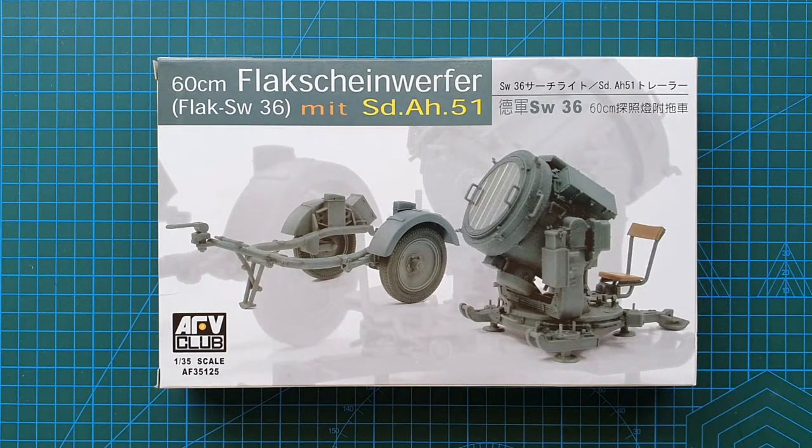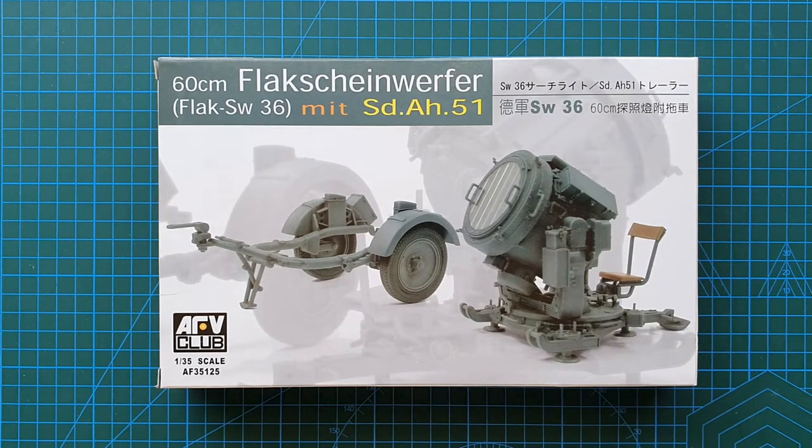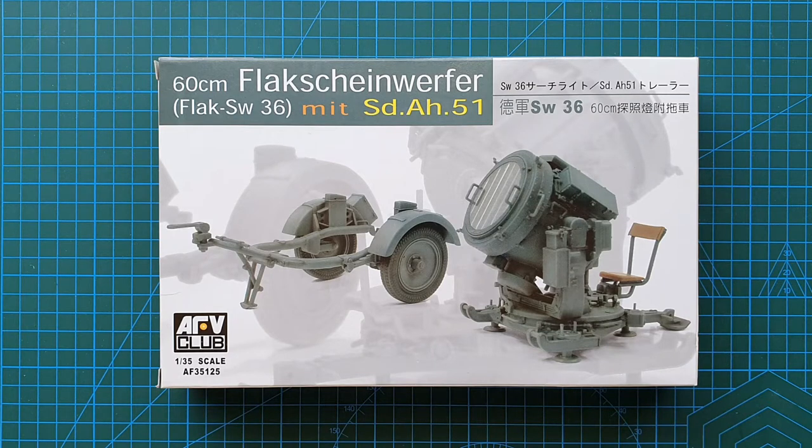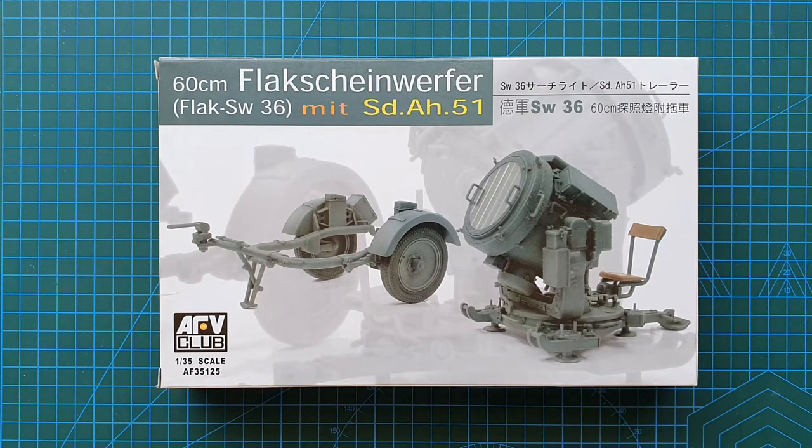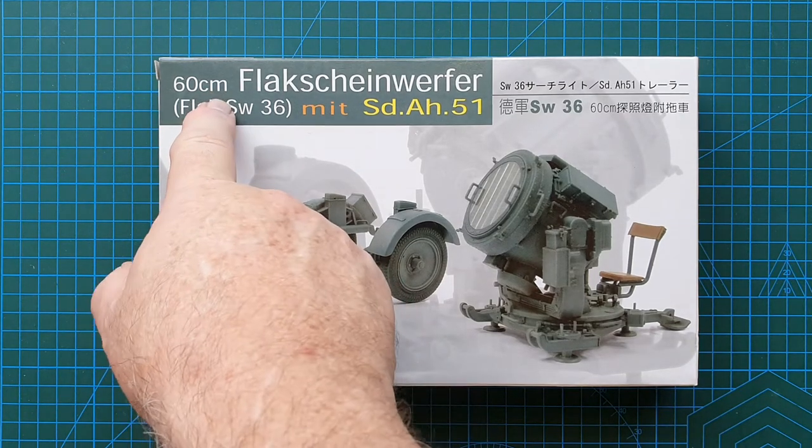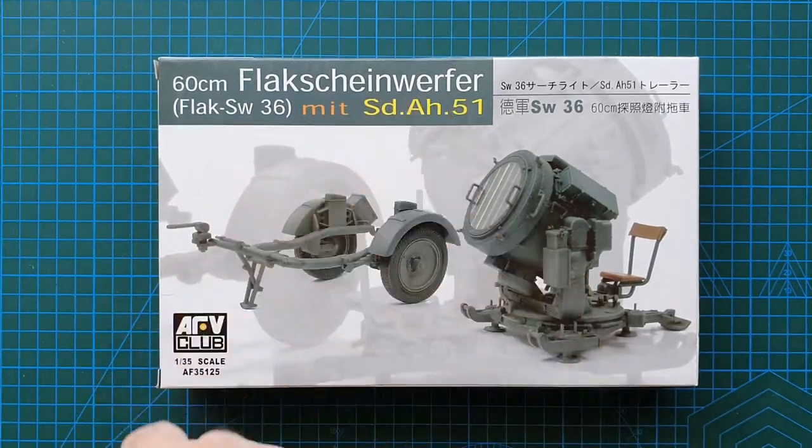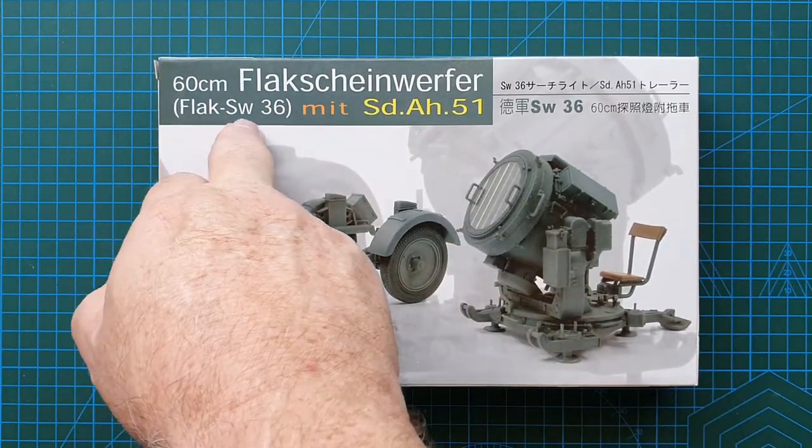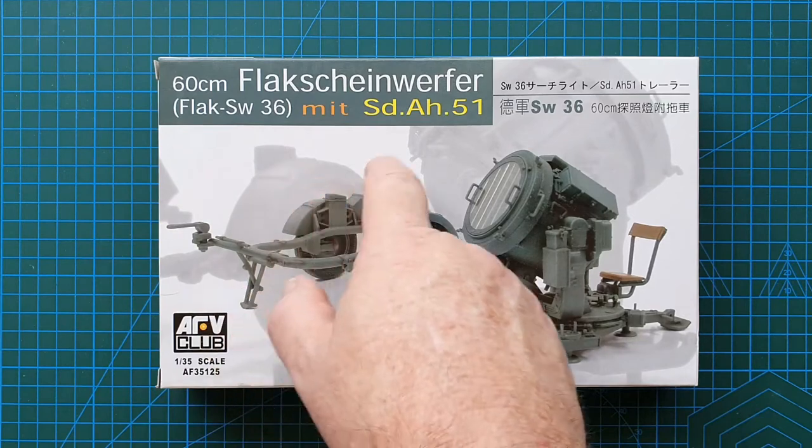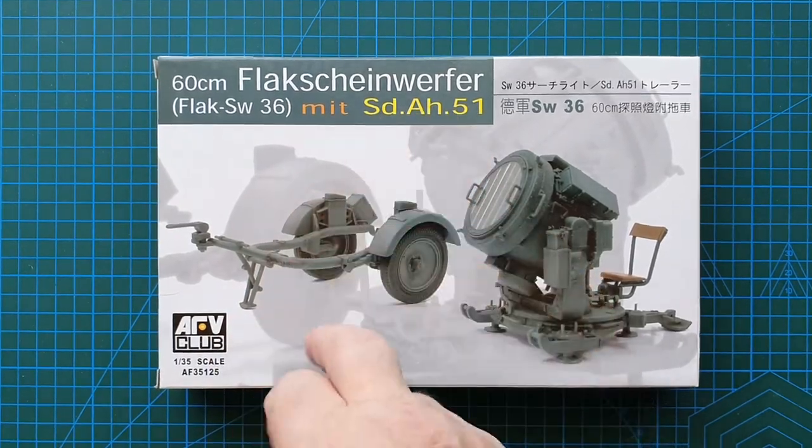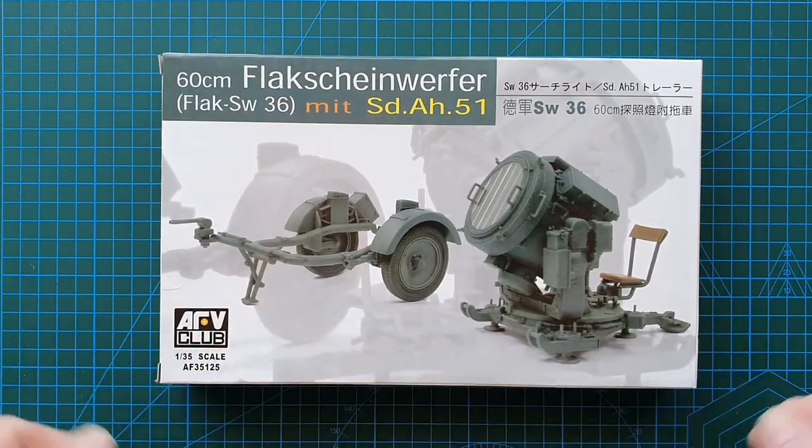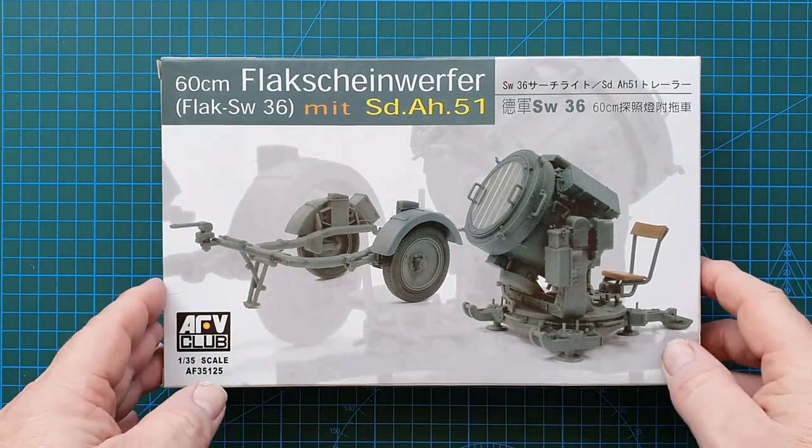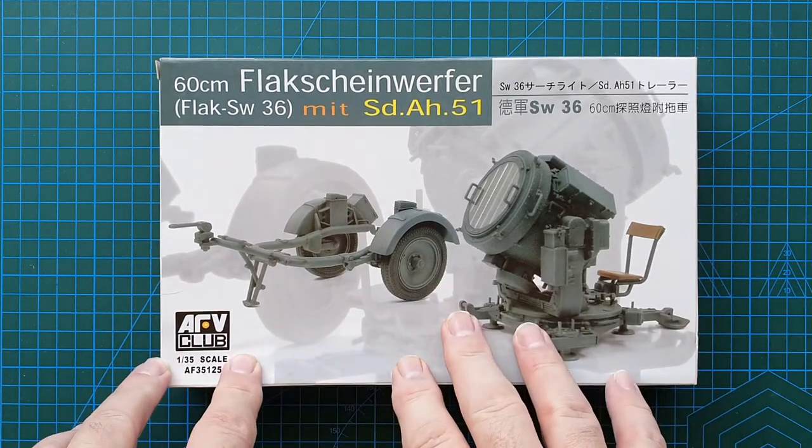Hi guys and welcome to another kit review. Today we're having a look at a kit from AFV Club in 1:35 scale. The kit number is AF35125 and it is a 60 centimeter Flakscheinwerfer, basically Flak SW 36 mit Sd.Ah.51 - so a 60 centimeter searchlight with trailer.